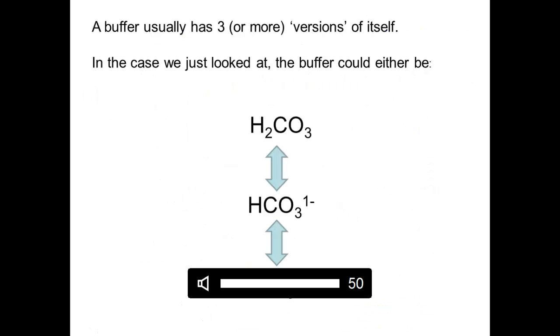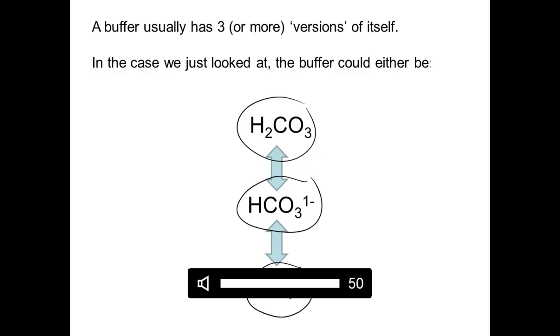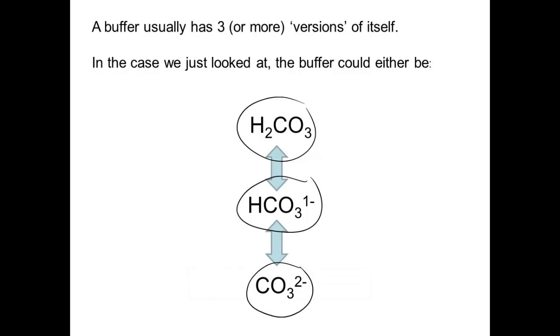So like I said, a buffer usually has three or more versions of itself. If we take a look at the buffer we've been talking about, you've got H2CO3, HCO3⁻ 1 negative, and CO3²⁻ 2 negative. These are the three different forms of the buffer. So let's talk first about what happens when you've got an acidic solution. The form of the buffer that you're going to be working with first is the buffer that has the most negative charges, because it's going to be the most attractive to the hydrogen ions in an acidic solution. You'll see that CO3²⁻ grabs onto one hydrogen ion and becomes HCO3⁻ 1 negative. HCO3⁻ 1 negative is still negative, so it can still attract one more hydrogen to become H2CO3.